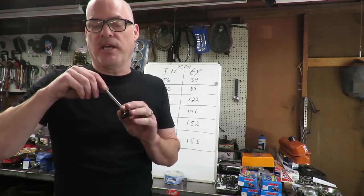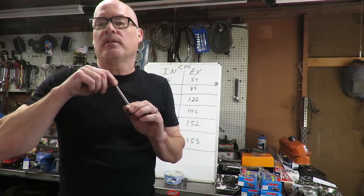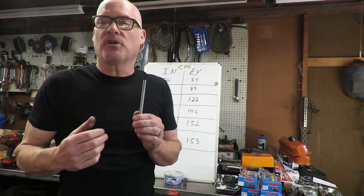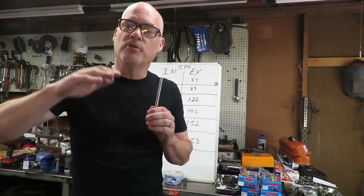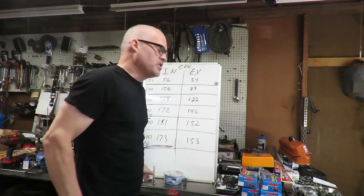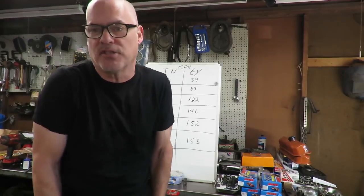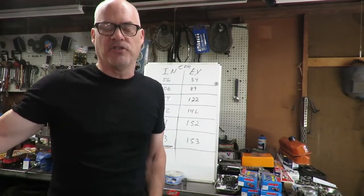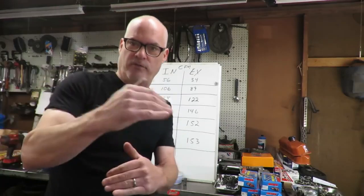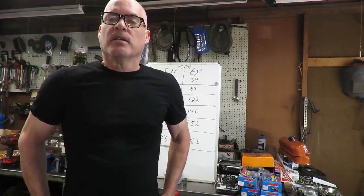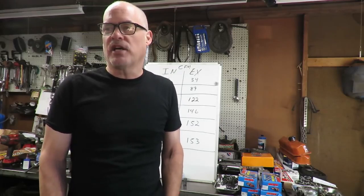The bigger the cam lobe profile, the sooner it opens the valve, holds it open longer, and closes it later. Big duration cams do that. The bigger the duration, the bigger the effect on RPM range and power output. Big duration cams as a general rule move the power band up. In the catalog you'll see advertised durations around 250-260 for a stock cam — those are the big advertised numbers the cam manufacturer likes to use because they're a bigger number. We also have actual duration which is a better judge of power, but for our purposes we'll use advertised duration.